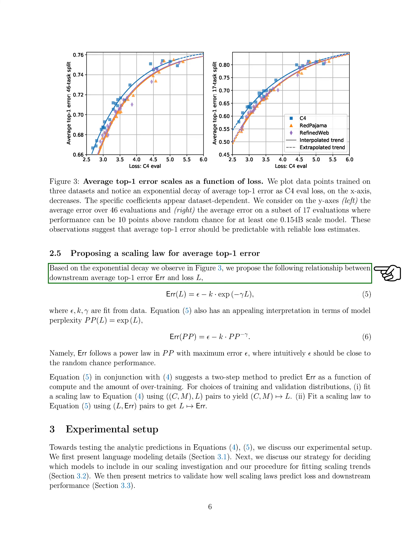Based on the exponential decay observed, we propose a relationship between downstream average top-1 error and loss L, where certain parameters epsilon, k, and gamma are determined from data. This relationship also relates to model perplexity, where error follows a power law and perplexity with a maximum error epsilon close to random chance performance. This relationship suggests a method to predict error based on compute and the level of overtraining.